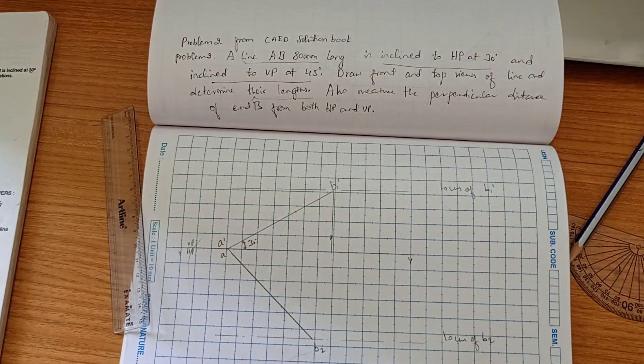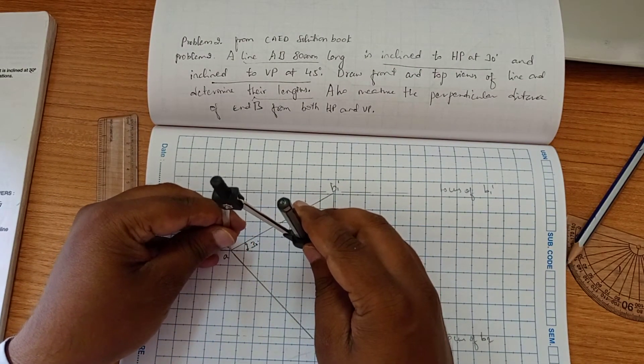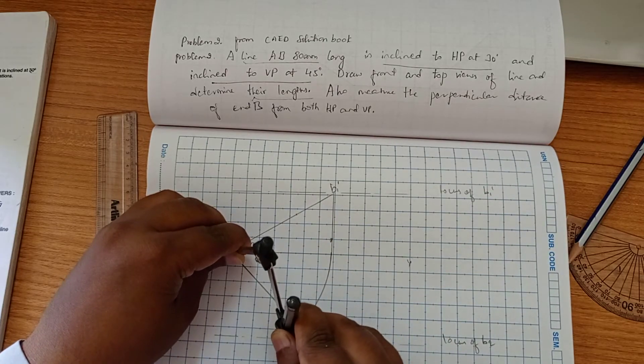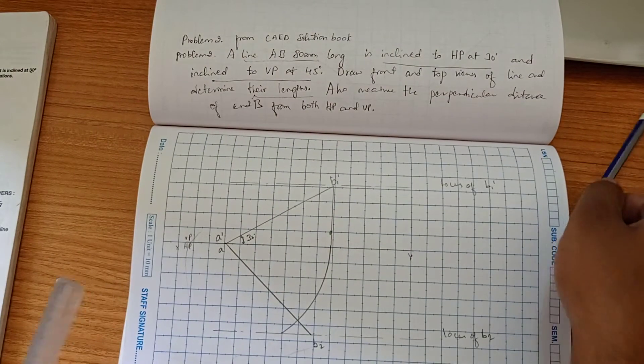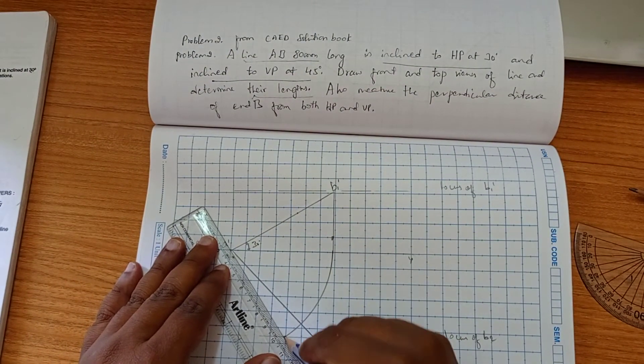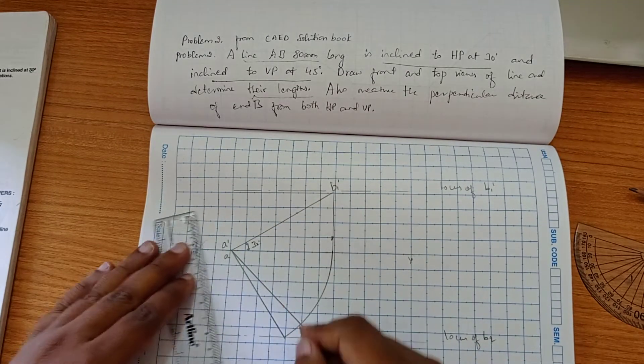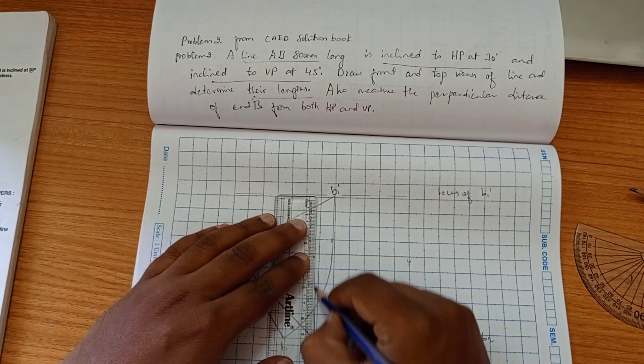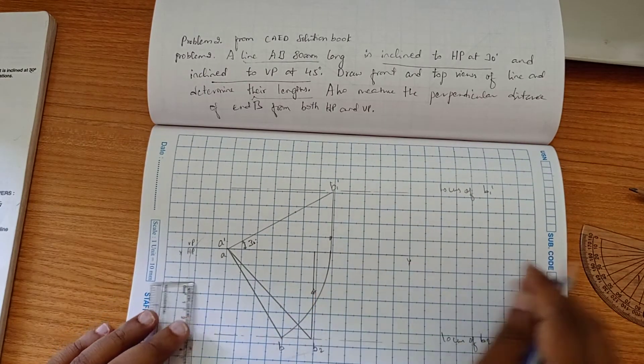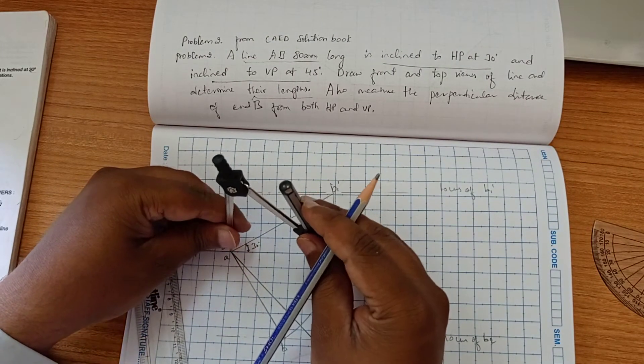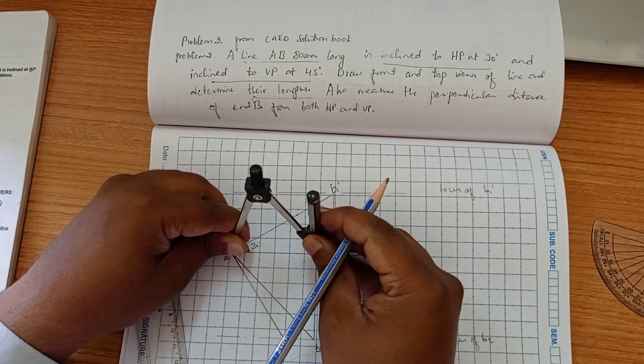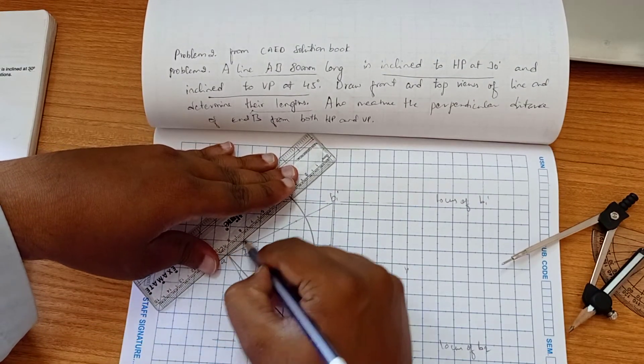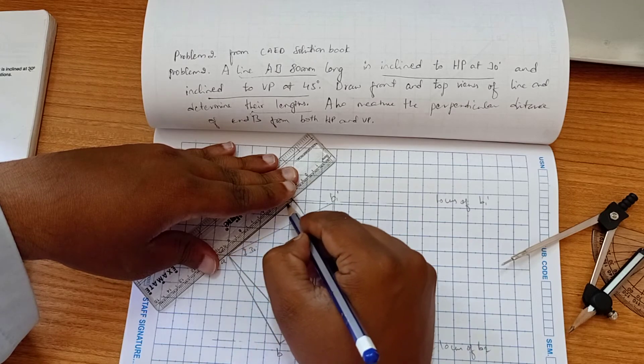Now we have to take the compass. So this is going to draw a locus down here. And this is our upper end length AB. Now we have to put the compass here and join here. This is A.